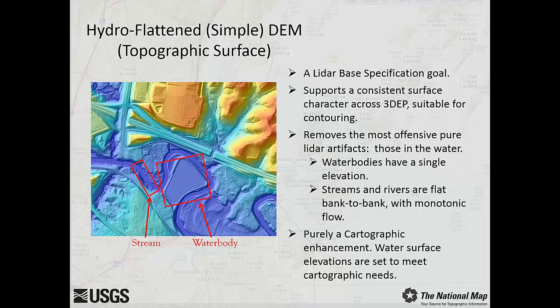The simple hydroflattened DEM is a representation of the surface that is cartographically acceptable in appearance and is suitable for creating contours. Offensive triangulation artifacts have been removed. Note the different appearance of the water features compared to the previous slide. The hydroflattened DEM as a deliverable is a goal of the USGS LiDAR-based specification. Please note that the hydroflattening is purely a cartographic enhancement. Although the water bodies are considered to have a single elevation, that elevation is estimated from the adjacent terrain and is not representative of any measured water surface elevation, and should not be used for calculations of water volume flow or any other hydrologic or hydraulic modeling. Topographic contours created from hydroflattened DEMs are created with the bridge decks removed from the model, but road surfaces are left intact over drainage culverts.